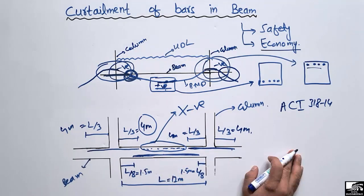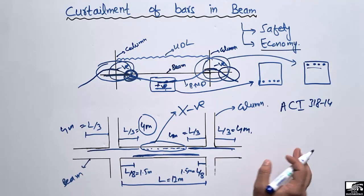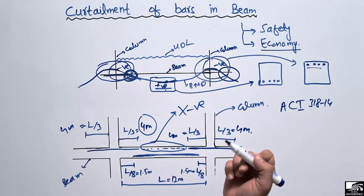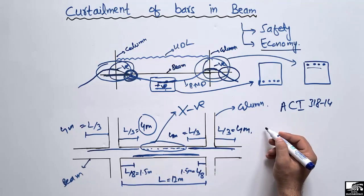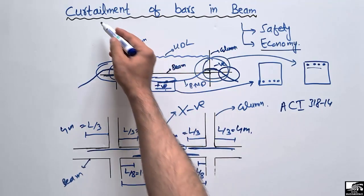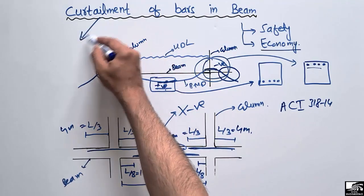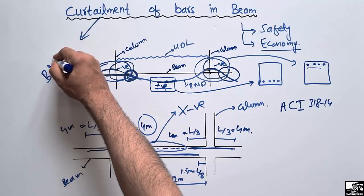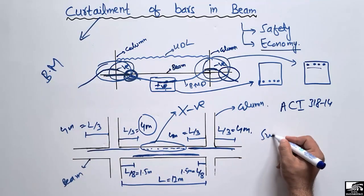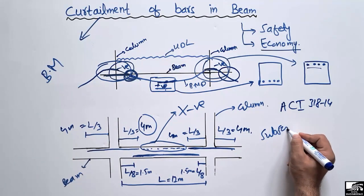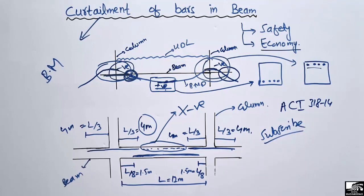This is the reason why we do curtailment of bars — because we don't need bars in sections where there is no bending moment. This curtailment of bars all depends upon the bending moment diagram. Hope you guys understand, and don't forget to subscribe to our channel for daily Seven Engineering videos. Thank you for watching.